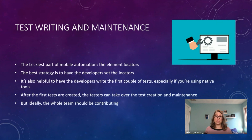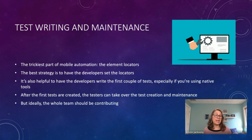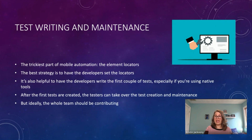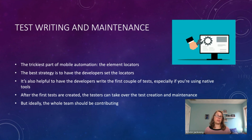The best strategy is to have developers set the locators while they're writing the code. When they're adding a new element to the page, they can identify it with some kind of ID you can reference in the tests. It's also helpful to have developers write the first couple of tests, especially if you're using native tools — they know the framework, where everything lives, and how to organize classes and methods. Once they've done that, it's much easier for testers to take over test creation and maintenance, but ideally the whole team should be contributing.